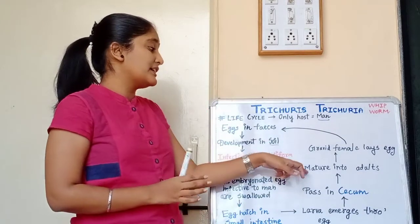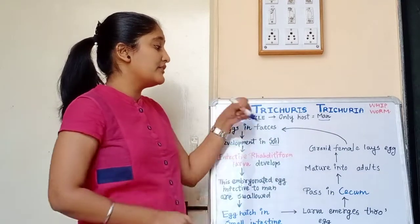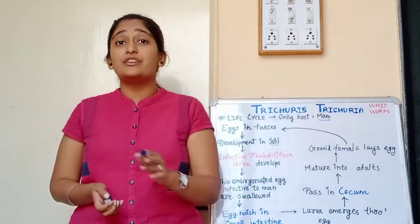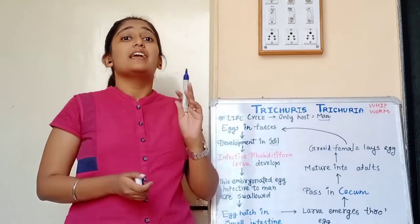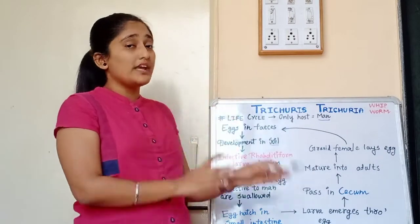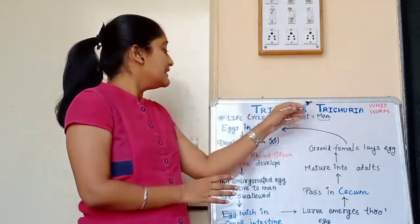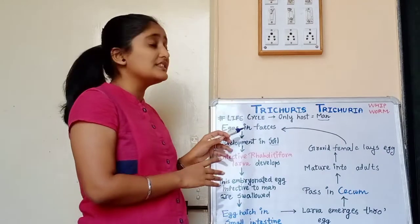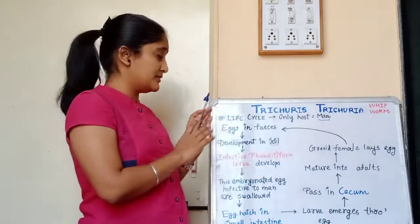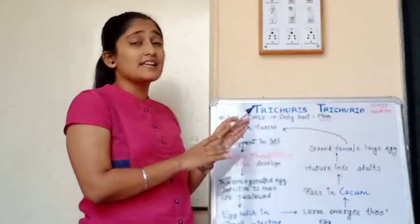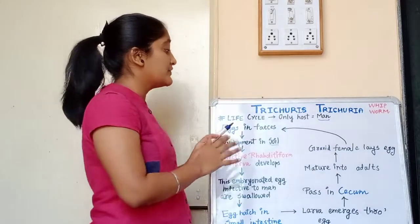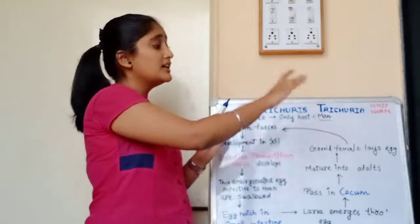The infective rhabdiform larva develops into mature adults. The mature adults release eggs, which are then passed out in feces, and the life cycle continues.